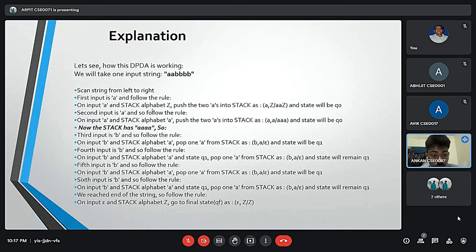Explanation: Now let's see how a DPDA works. We will take one input string AA and 4Bs. First, we scan the string from left to right. When A comes, push A two times into the stack, and when A comes again, do the same. Then when B comes, pop one A from the stack each time.